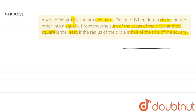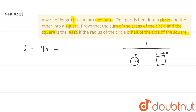We have a wire of length L. It is cut into two parts — one part is bent into a circle and the other into a square. Let the radius of the circle be r and the side of the square be a. Then L equals the perimeter of the square plus the circumference of the circle: L = 4a + 2πr. From this, a = (L − 2πr) / 4.